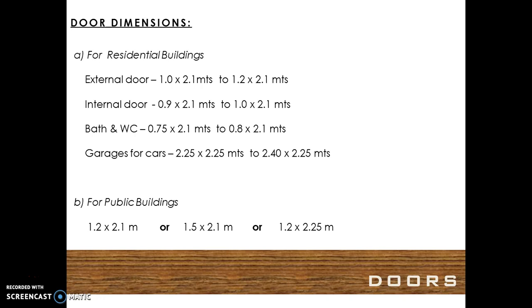The internal door should be 0.9 m by 2.1 m to 1.0 m by 2.1 m in height. Bathroom or WC doors should be minimum 0.75 m by 2.1 m to 0.8 m by 2.1 m.